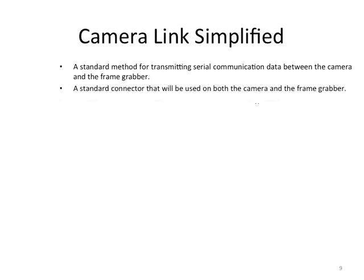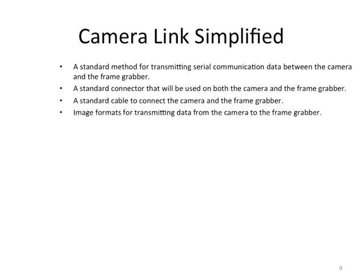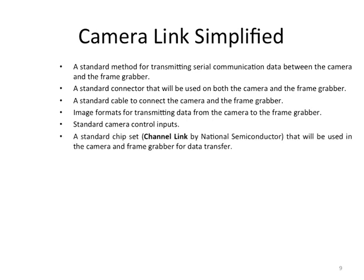Major elements of CameraLink: it's a digital interface standard for non-consumer cameras and components that makes the connection of cameras and components easier. There are three major CameraLink components: a CameraLink camera, a frame grabber, and a cable.